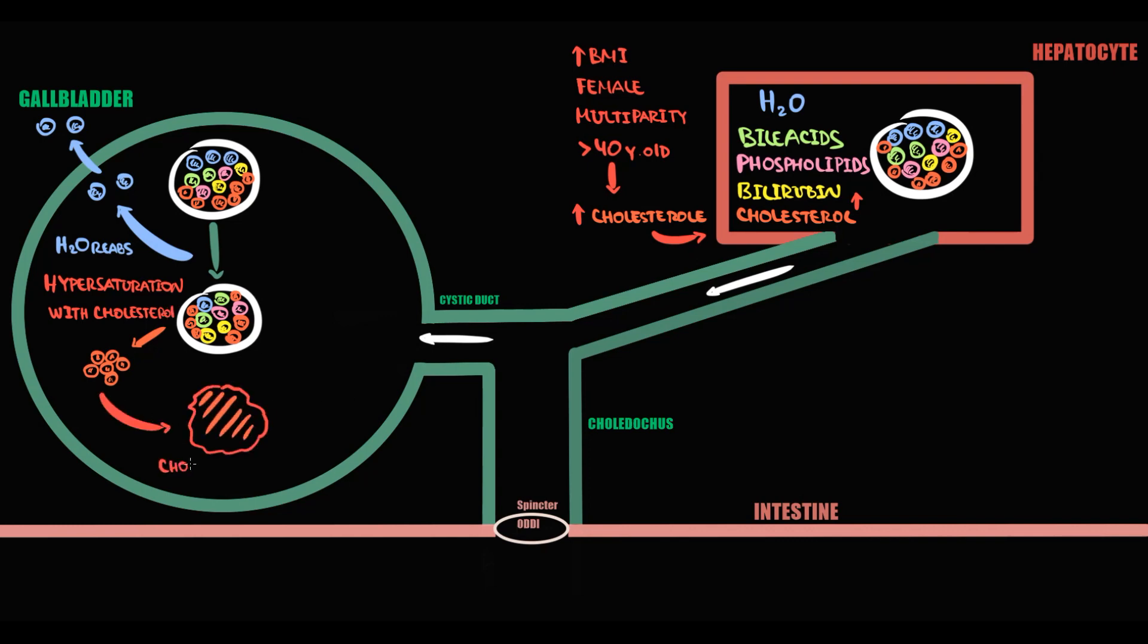With time this causes formation of a cholesterol gallstone. The presence of gallstone in the gallbladder we call cholelithiasis. Such stones inside the gallbladder remain totally asymptomatic. But after intake of fatty meal, large amounts of fatty acids come to the duodenum.